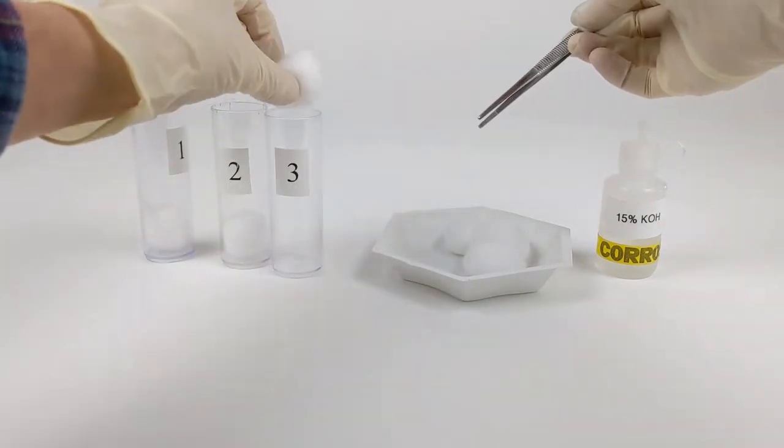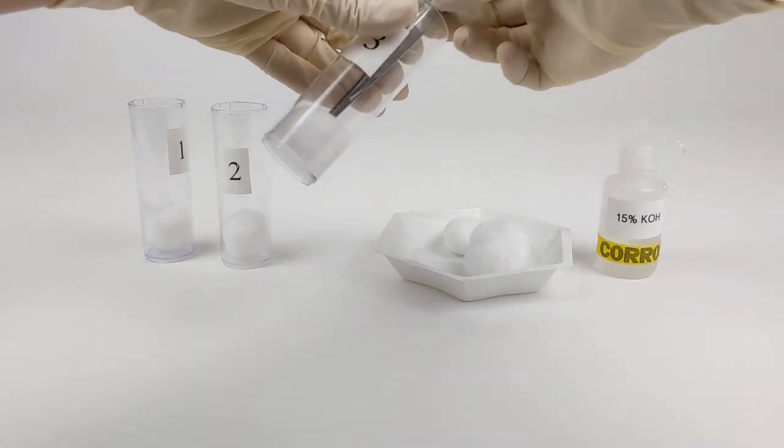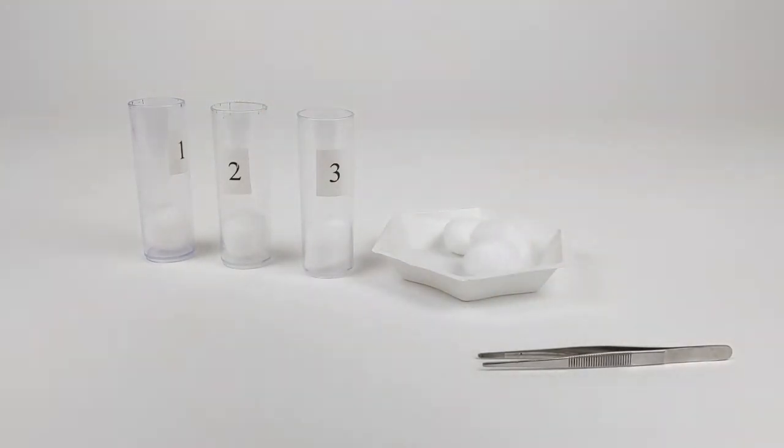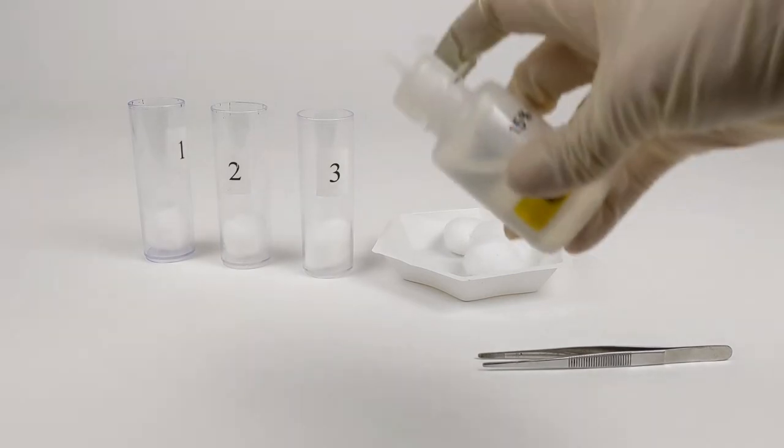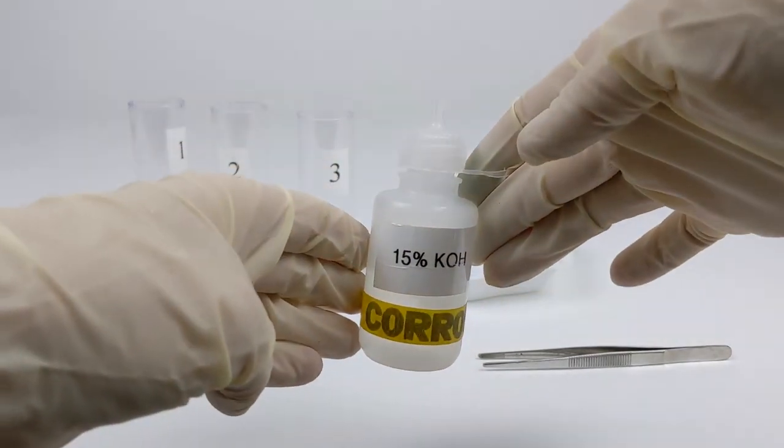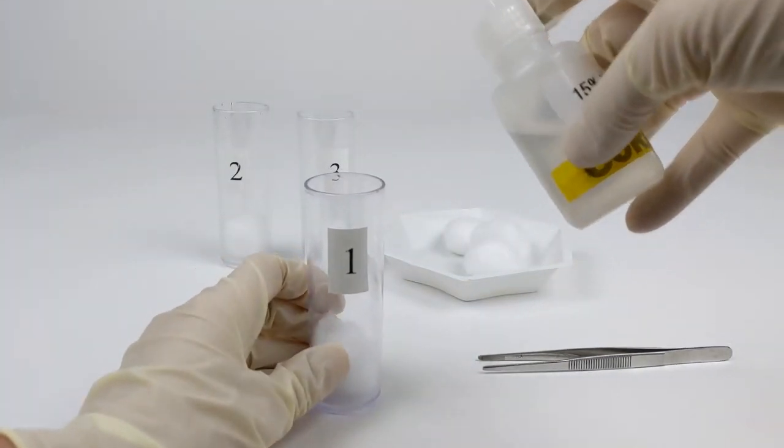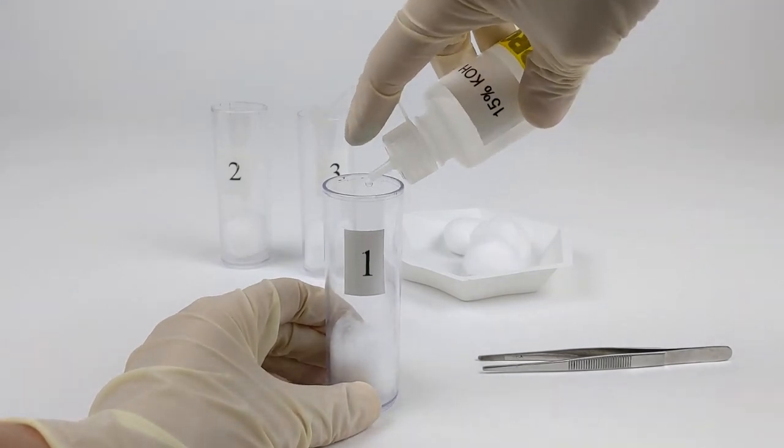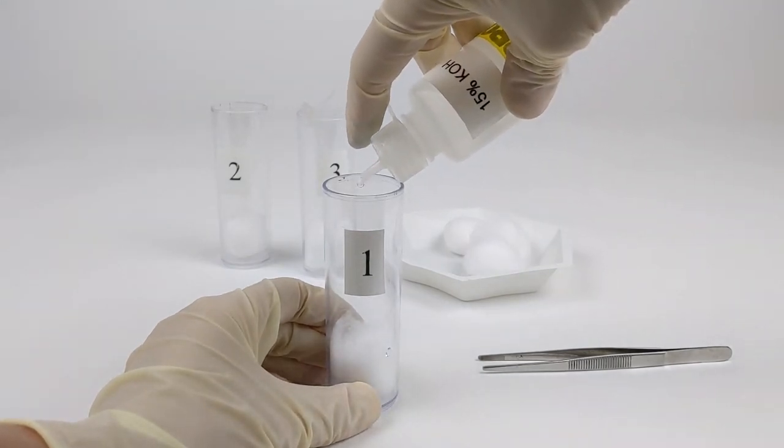So each vial is getting one cotton ball to start off with, and then each cotton ball will be saturated with 15% potassium hydroxide solution. That's about 60 drops, which I'm going to add to each vial.